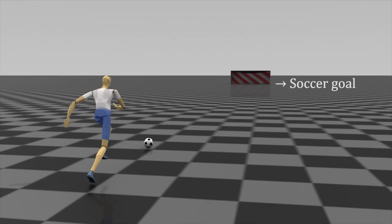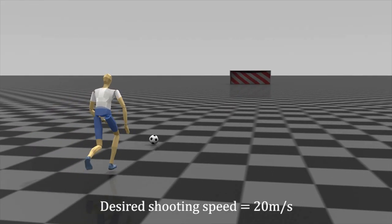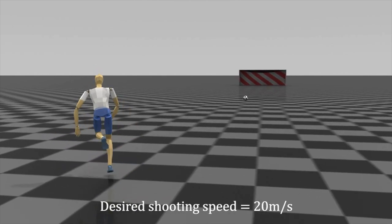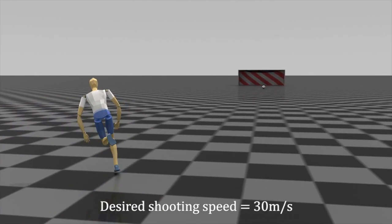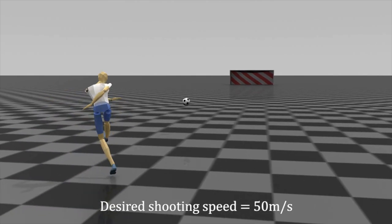Shooting with different target velocities. The magnitude of the target velocity determines how powerfully the character kicks the ball. As the desired ball speed increased, the character successfully kicked the ball harder to make it move faster.